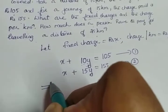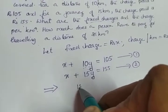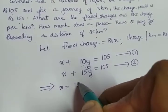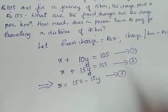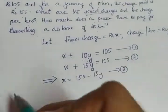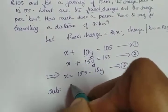From equation number 2, what we get? x is equal to 155 minus 15y. Let this be equation number 3. Substitute the third equation in the first one - substituting 3 in 1.